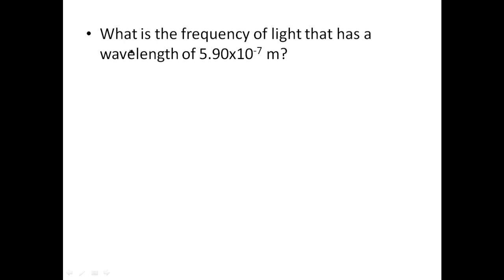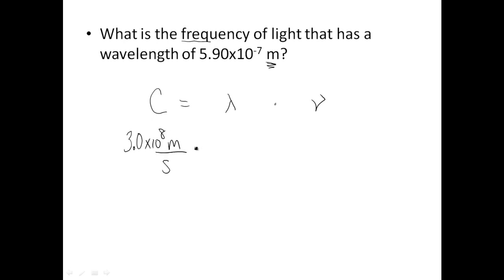Here we go. It says what's the frequency, and you have the wavelength. When you're asked for frequency, first check to see if your wavelength is in meters — and yes, it is. Write out the equation: C equals wavelength times frequency. Always plug in your speed of light: 3.0 times 10 to the 8th meters per second. Write it that way so you can see the units canceling out. Then put your wavelength, which is 5.90 times 10 to the negative 7th meters, times the frequency symbol.